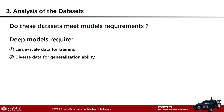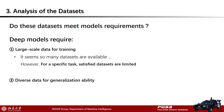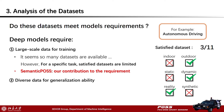Deep models require large-scale data for training, and diverse data for generalization ability. For the first requirement, it seems many datasets are available. However, for a specific task, satisfied datasets are limited. For example, if we focus on LiDAR semantic segmentation for autonomous driving, we need outdoor scene data with dynamic information, because moving objects are very important for autonomous cars. The gap to reality also makes synthetic datasets unreliable for autonomous driving systems. As a result, for a specific task, satisfied datasets are usually limited. So we propose Semantic POS as our contribution to address this requirement.